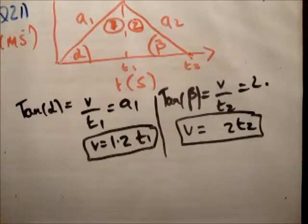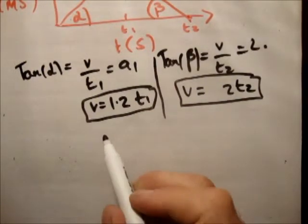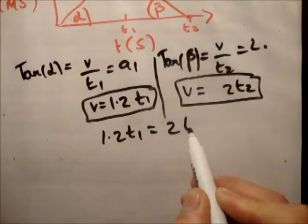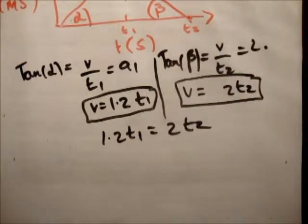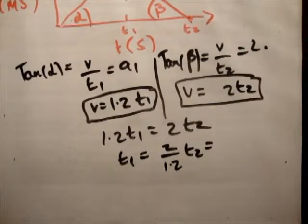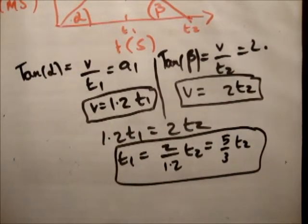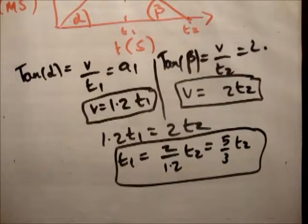So we have two expressions for V, and we have an expression for T1 and T2. So as a result, we can say 1.2 T1 is equal to 2 times T2. Or you could say that T1 is equal to 2 over 1.2 T2. And that's equal to 5 over 3 T2. That's pretty good so far.